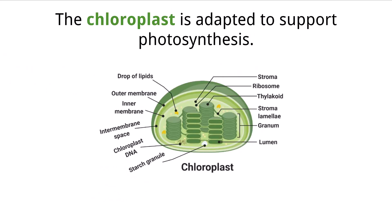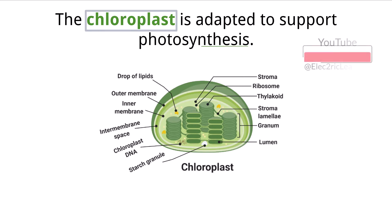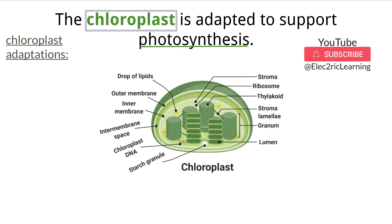In addition to the mitochondria, another important organelle that plant cells have that ultimately aids in the creation of energy is the chloroplast. This organelle is used to create glucose molecules from captured light energy via the process of photosynthesis, and also has many adaptations it uses to do so.